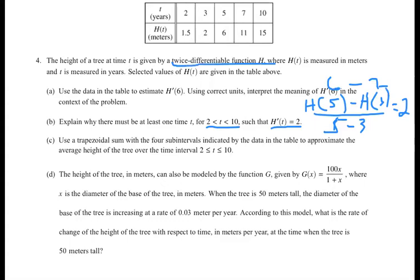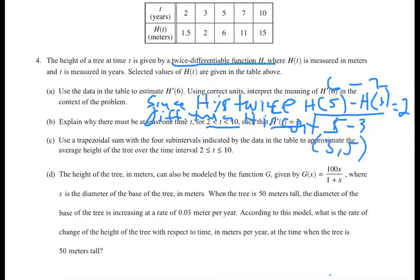Remember we had this twice differentiable h. So we would say since h is twice differentiable, then h is continuous. I said earlier from 2 to 10, you can say 2 to 10 here, or you can say from 3 to 5 because that's the t values we're using. Either one is fine.